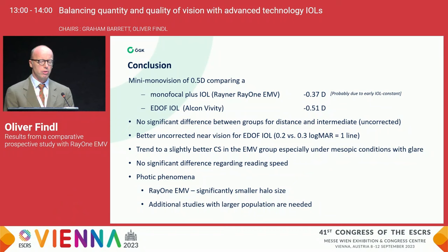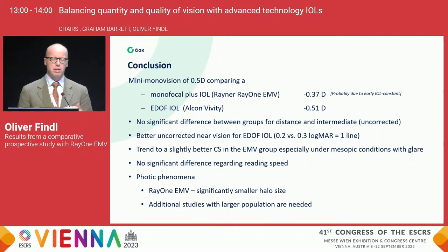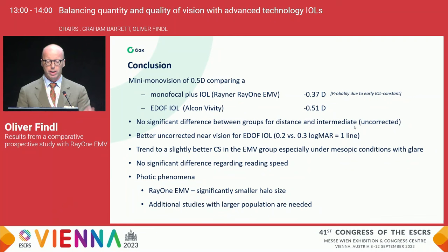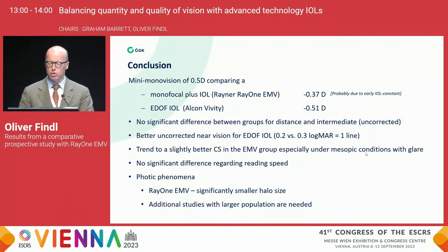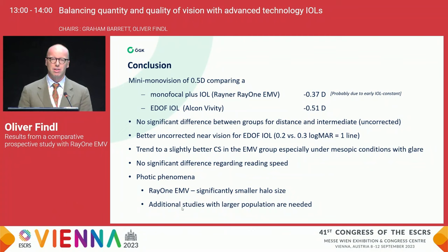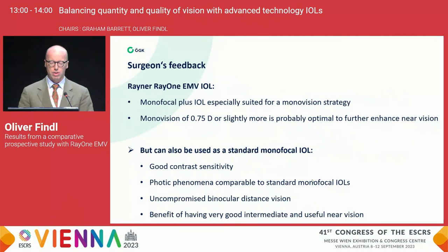In conclusion, this was a mini-monovision trial of half a diopter comparing a monofocal plus lens — the Ray-1 EMV — with an EDOF IOL, the Vivity. We saw no significant difference between groups for distance and intermediate uncorrected vision. But we did see better uncorrected near vision for the EDOF IOL. There's a trend for slightly better contrast sensitivity with the EMV group, especially under mesopic conditions with glare. The photic phenomenon — the EMV had a smaller halo size. With a study of about 50 patients, subjective questionnaires for dysphotopsia are a difficult issue — you need more patients.